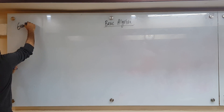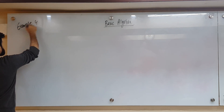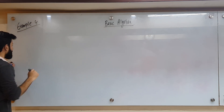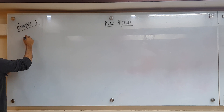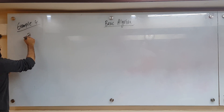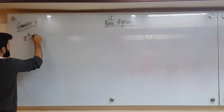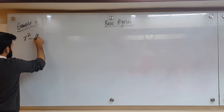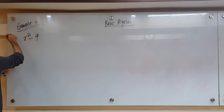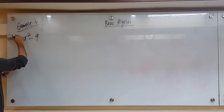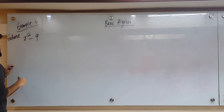This will be example 4. Now suppose x squared minus 9. What will you do — expand or factorize? We will factorize. Now tell me what you see here. Do you see two perfect squares?